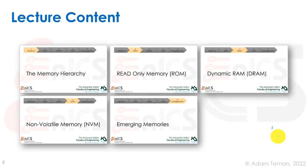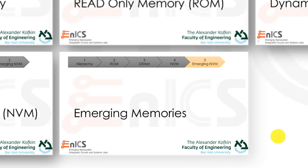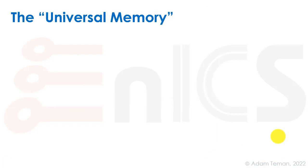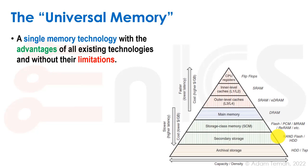Having covered the traditional non-volatile memories of NAND and NOR flash, I want to now continue into the candidates for replacing them, which are known as emerging memories. So let's discuss the concept of a universal memory — maybe a utopian universal memory. This would be a single memory technology with the advantages of all existing technologies and without their limitations.